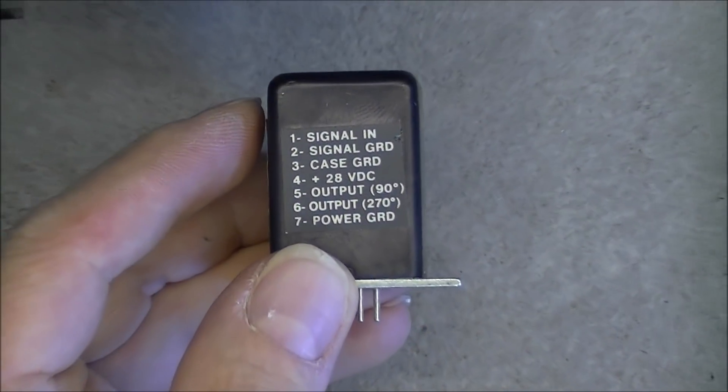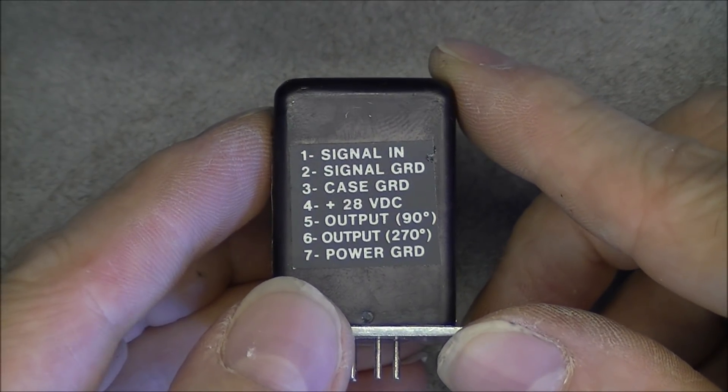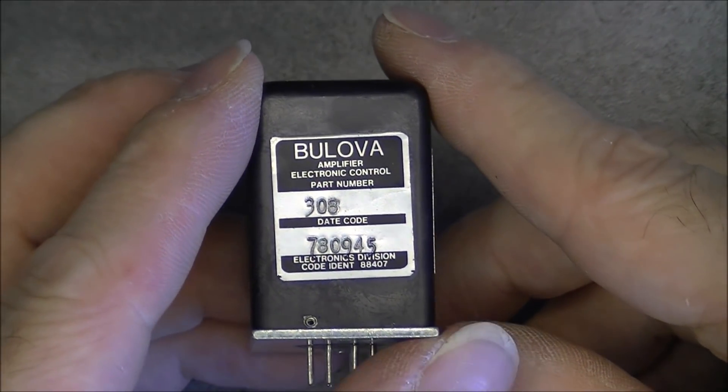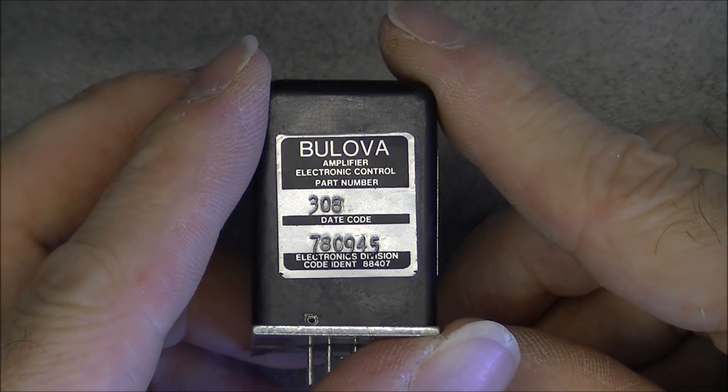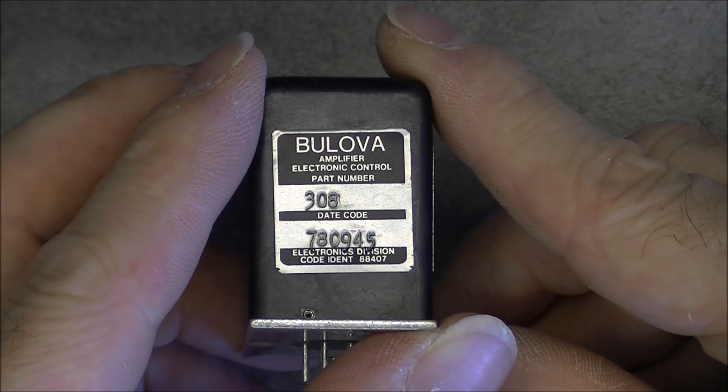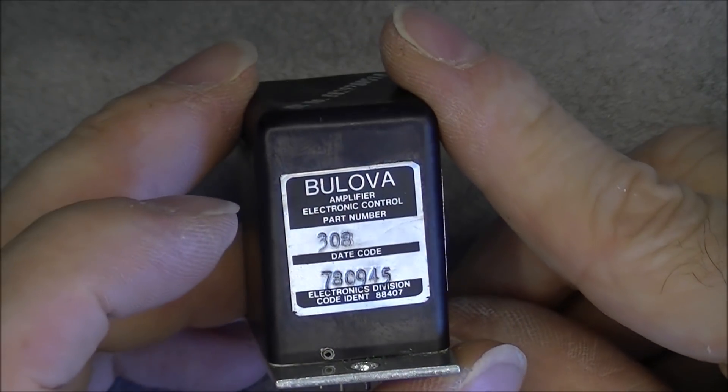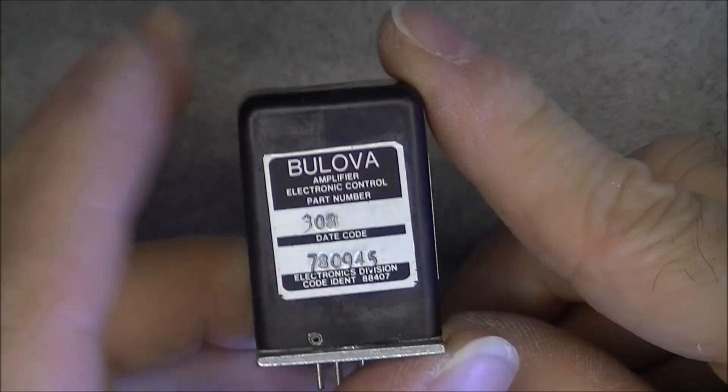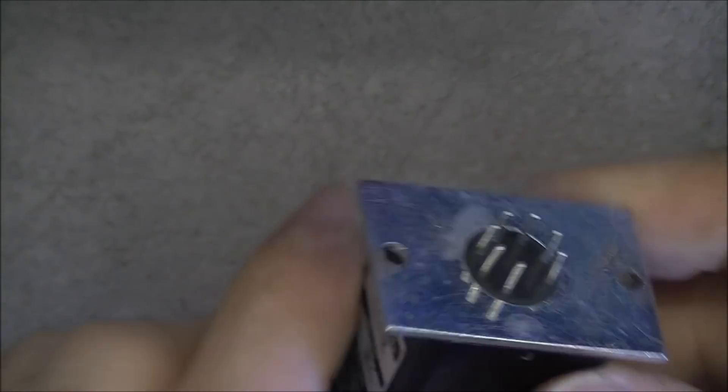So some kind of a phase shift amplifier, something like this. Made by Bulova. Yes, very expensive brand. Amplifier, electronic control. Date code 78. It seems. 45 days of September 78. Maybe not. Interesting. Okay. So this one was the first one.